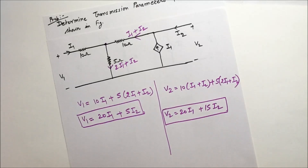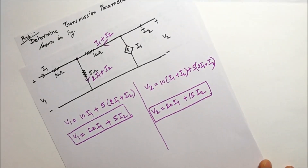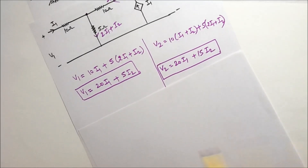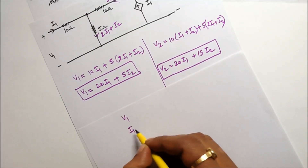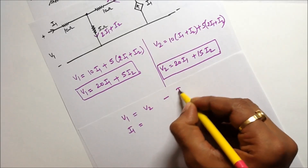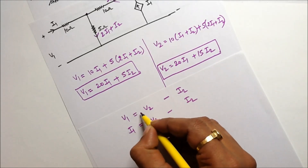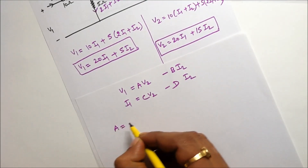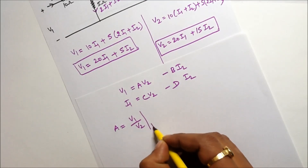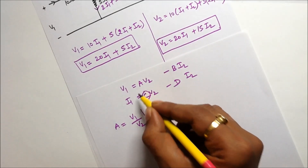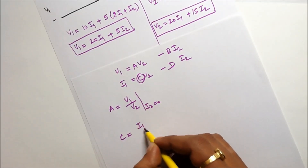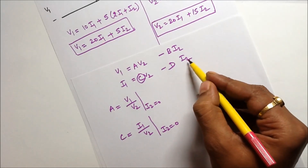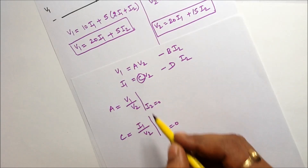Now I have to find out the transmission parameters. For the transmission parameters, I can write V1 and I1 as functions of V2 and minus I2, with parameters A, B, C, and D. A is defined as V1 upon V2 when I2 equals 0. C is defined as I1 upon V2 when I2 equals 0.